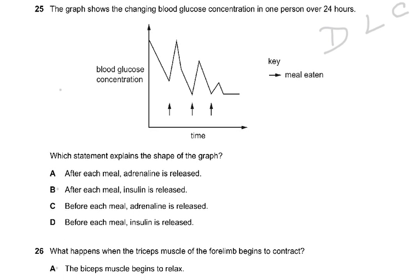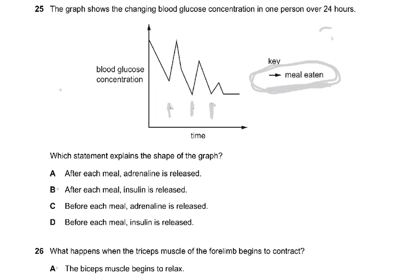Question number 25: the graph shows the changing blood glucose concentration in one person over 24 hours. When a meal is taken — bread, roti, rice, biryani — your blood glucose was down, then after the meal the blood glucose goes up.